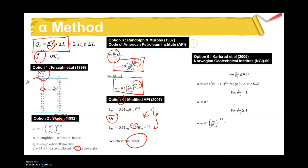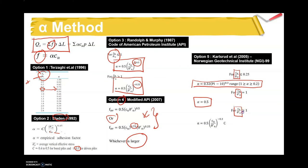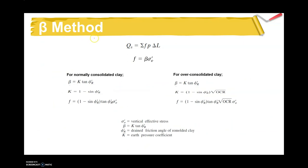Option five, by Karlsrud (Norwegian Geotechnical Institute, NGI): determine the ratio cu/σ′_v0 first. If the ratio ≤ 0.25, read the alpha value from the given range. If the ratio equals 1, alpha is 0.5. If the ratio is greater than 1, use the corresponding value from the table.